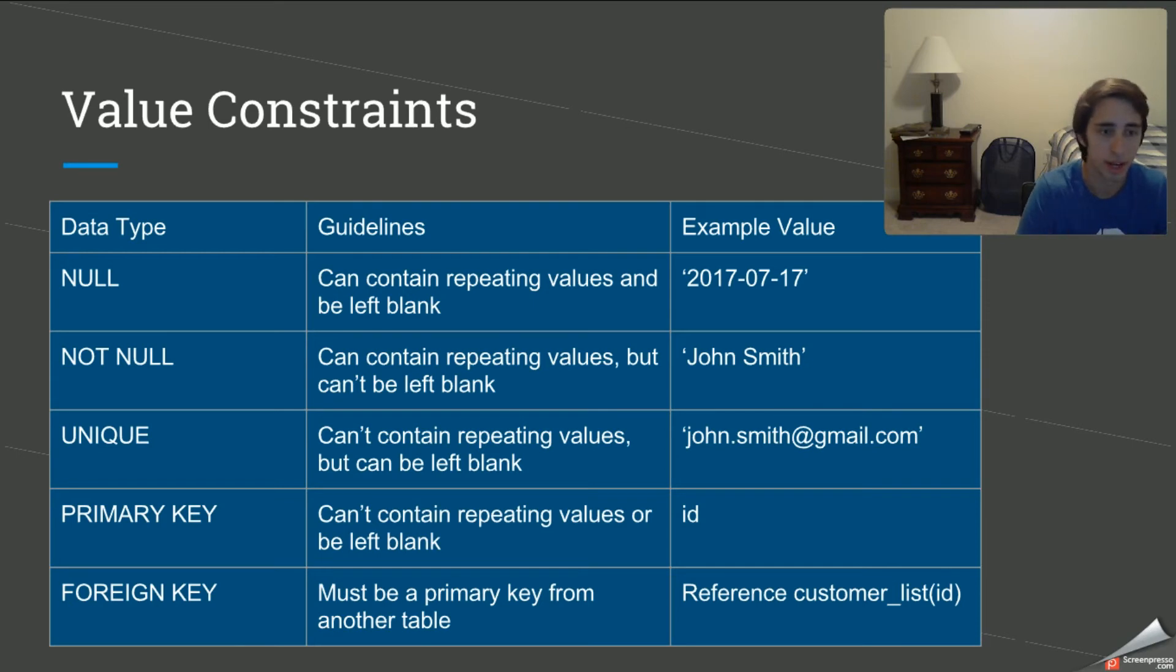So of course, NULL. This means that it can contain repeating values and it can be left blank. So for example, we have a date here. Let's say it's an optional date, meaning it can be left blank or not. It can be a repeating value. So we can have multiple rows in the same given column with the same value of that date.